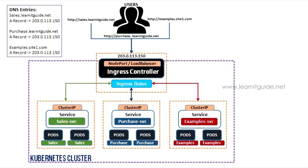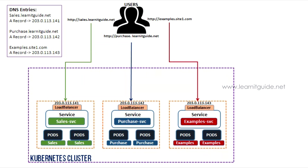Let's look at a simple architecture without an Ingress controller. In this architecture, there are three applications: Sales, Purchase, and Examples. For these three applications, we can access them using a load balancer or node port type. That's why we use load balancers. Just for three applications, you use three load balancers.